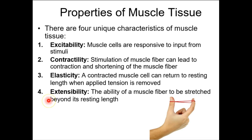Muscles have four main properties. Excitability — specifically electrical excitability. There is electricity in the human body. It's the movement of electrons. We'll do what we can to understand the electrical activity happening within nerves and muscles. Contractility means that they can shorten — the muscle is going to shorten in length, and that's going to be a contraction.